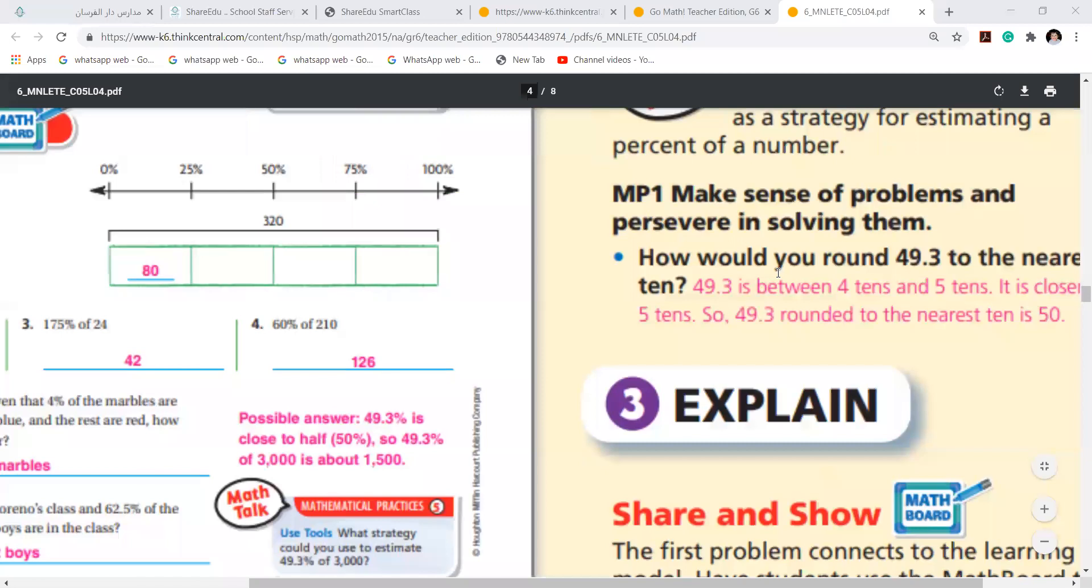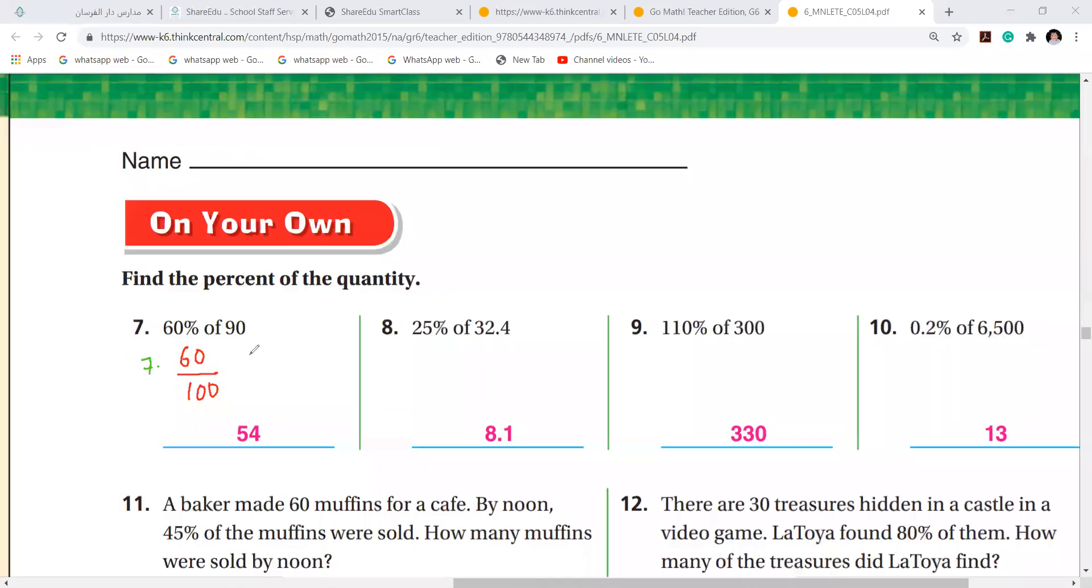We start with 291, question number 7. It's given to you: 60% of 90. I hope you all remember. 60% means 60 over 100.